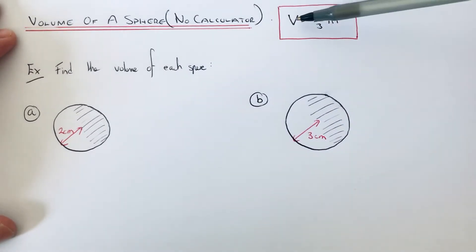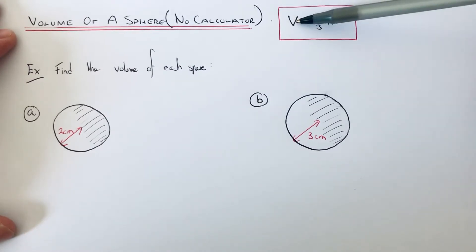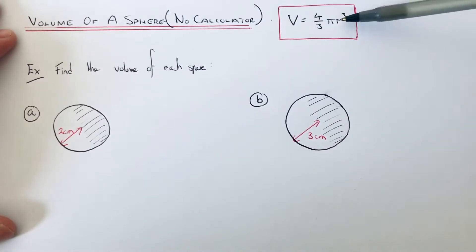To do this, you need to use the formula V = 4/3πr³, where V stands for the volume of the sphere and r is the radius of the sphere. The radius is the distance from the center to the outside of the sphere.